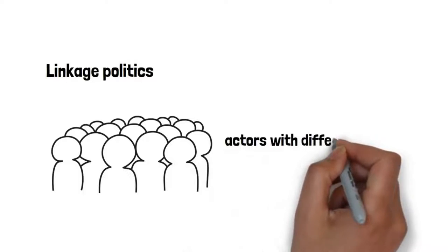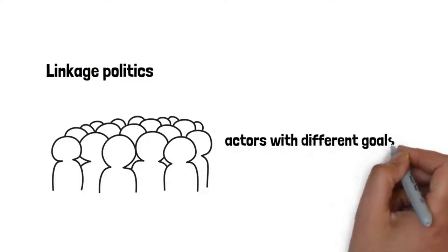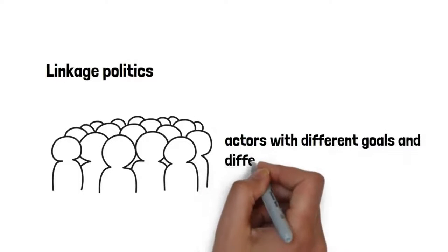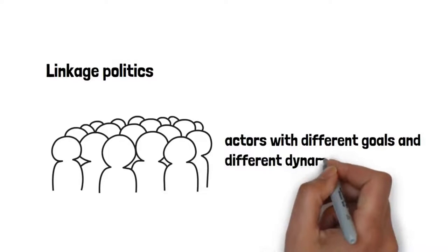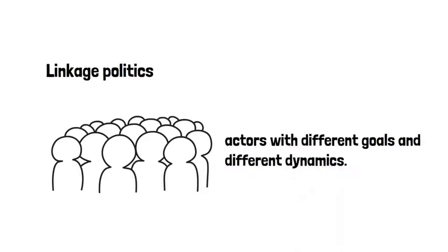It's a more complex relationship where we have linkage politics. Linkage politics is when we characterize actors who work with different goals and dynamics. For example, humanitarian organizations that pressure government bureaucracy to promote a certain environmental agenda while negotiating within the domestic legislature the construction of certain agreements. This allows them to build an agenda that influences the position of other states in the international system.